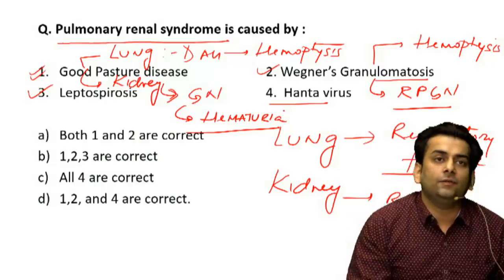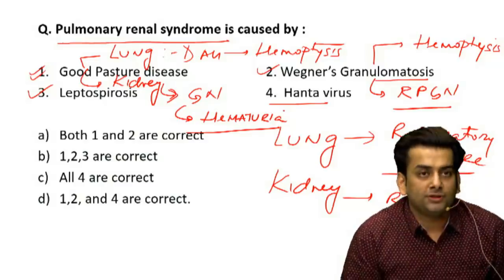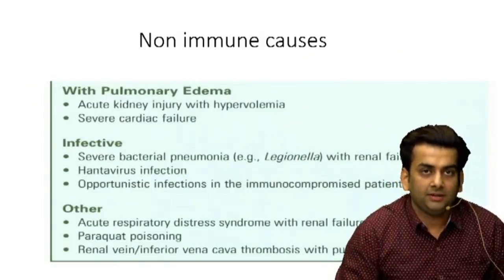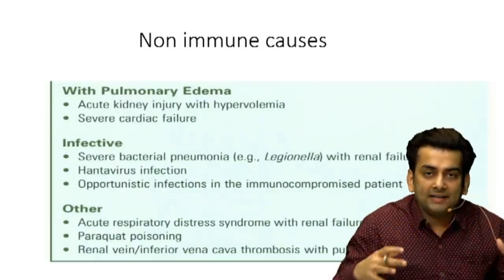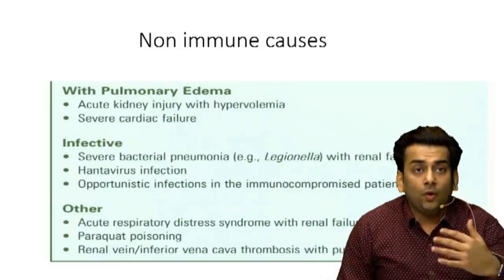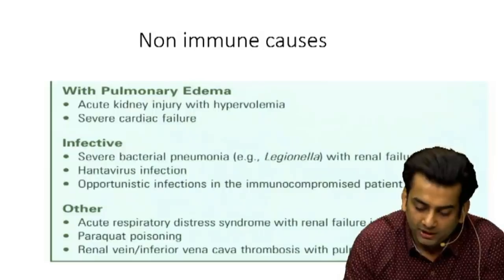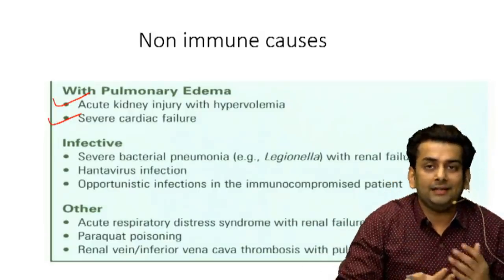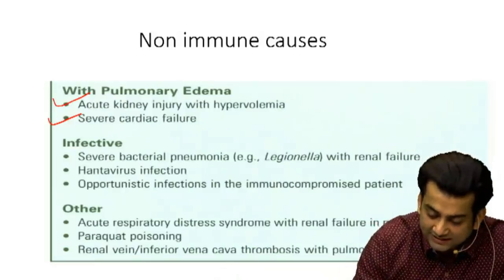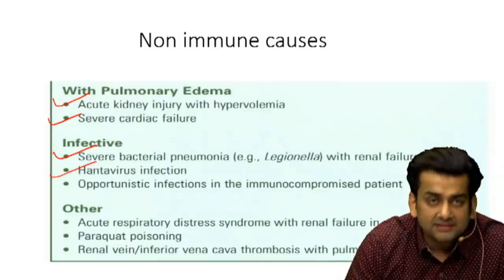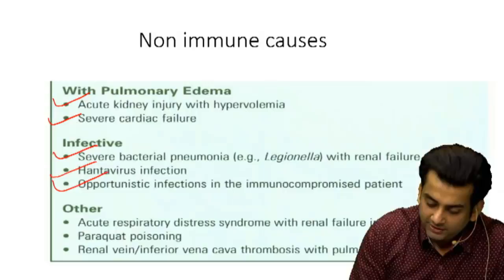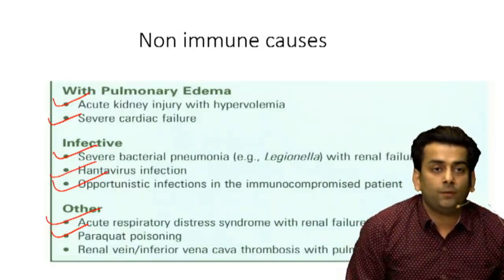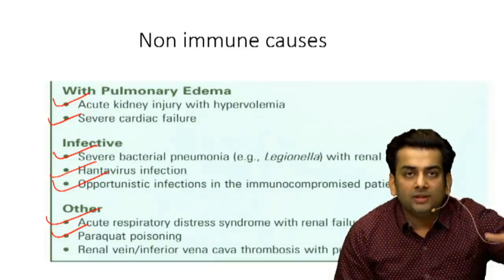All four options can involve both the renal and lung systems; hence, option C is the correct answer. Dividing pulmonary renal syndrome into non-immune causes: these include pulmonary edema with acute kidney injury and hypervolemia, severe cardiac failure (cardiorenal syndrome), infective causes such as Legionella, Leptospira, or Hantavirus, opportunistic infections in HIV patients, ARDS with multi-organ failure, paraquat poisoning with near 95–100% mortality, and renal vein or IVC thrombus with pulmonary embolism.